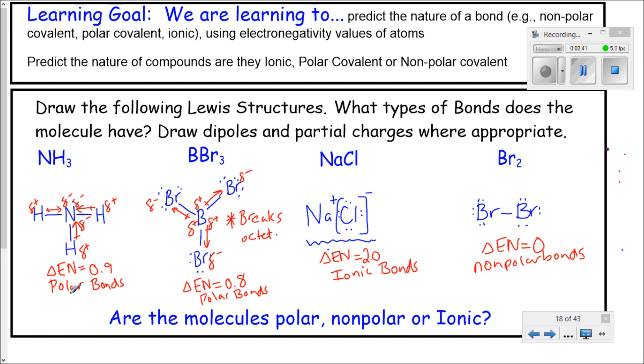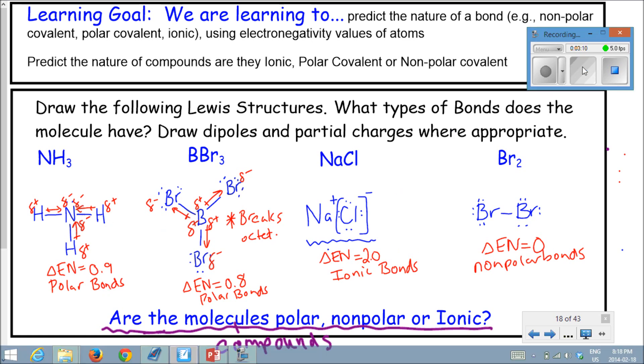The question that we have is, yeah, we can determine if the bonds are polar or not, if they're ionic. But the question is, are the molecules themselves - and I actually shouldn't use the term molecules, we should use the term compounds - are the compounds polar, nonpolar or ionic? That's the question that we want to ask. To do that, we have to go over a few ground rules to determine if you're polar or not.